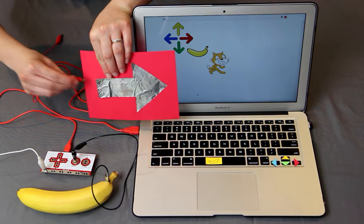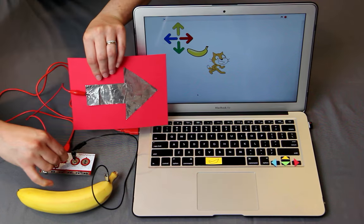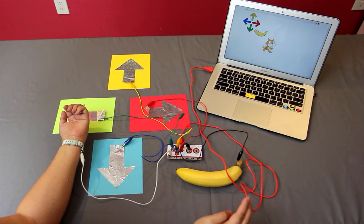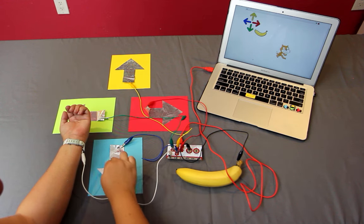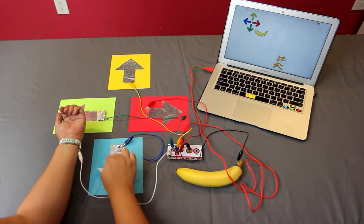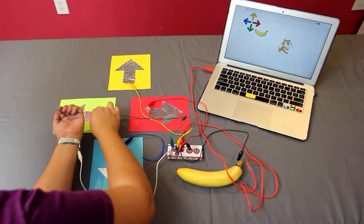Let's plug our arrow keys into our Makey Makey, and then we'll clip them to these aluminum foil arrows. Now we can play. When I touch the up arrow, the cat moves up. When I touch the down arrow, the cat moves down and so forth. When I touch the banana, it makes the meow sound because that's how we wrote our program.